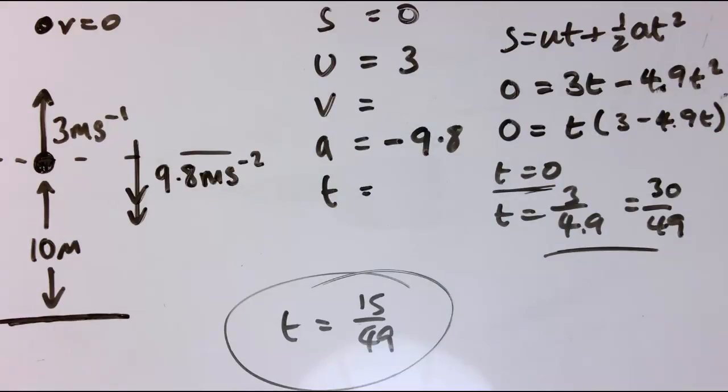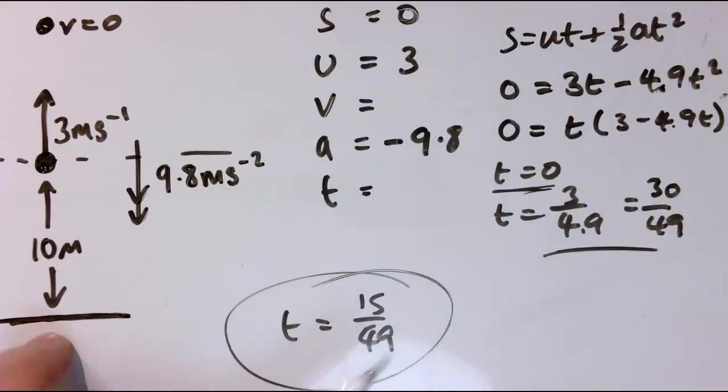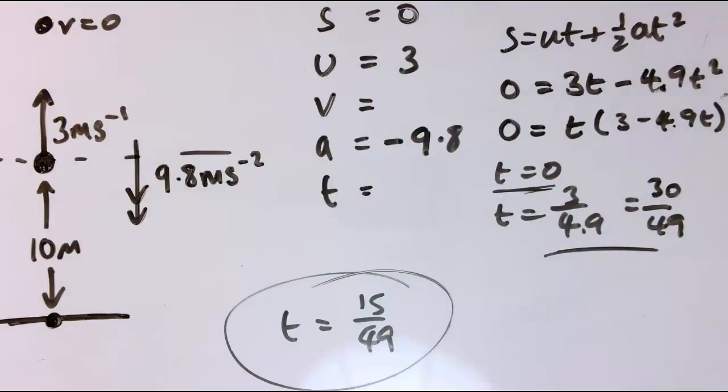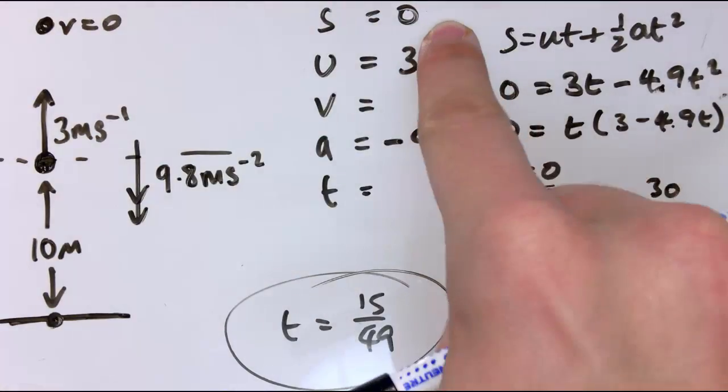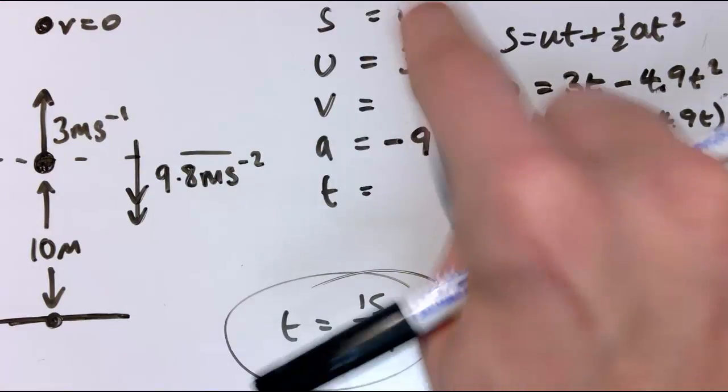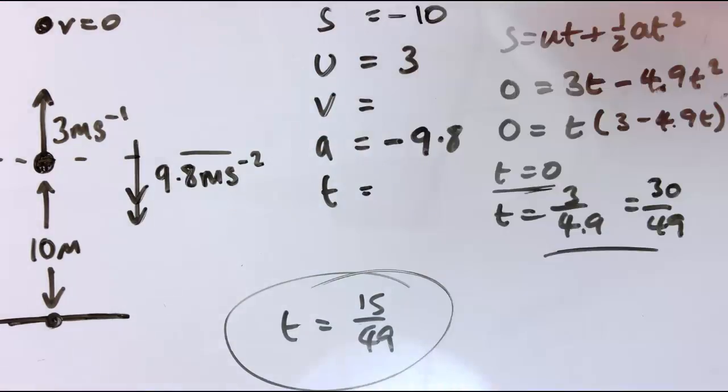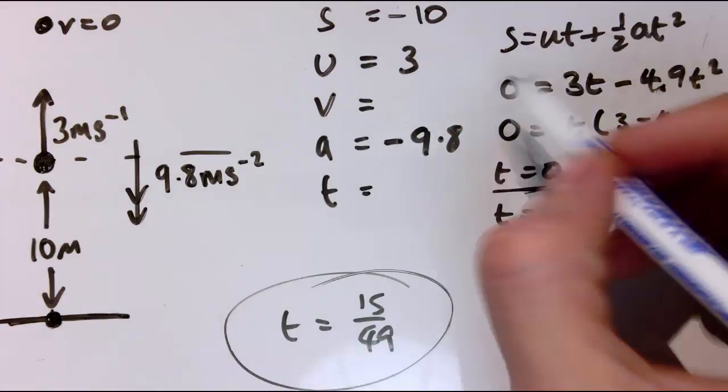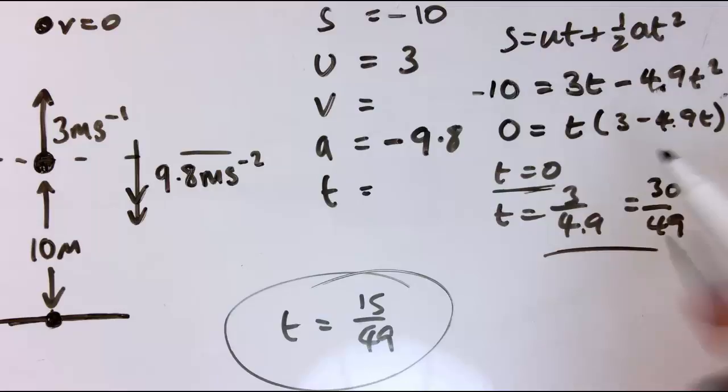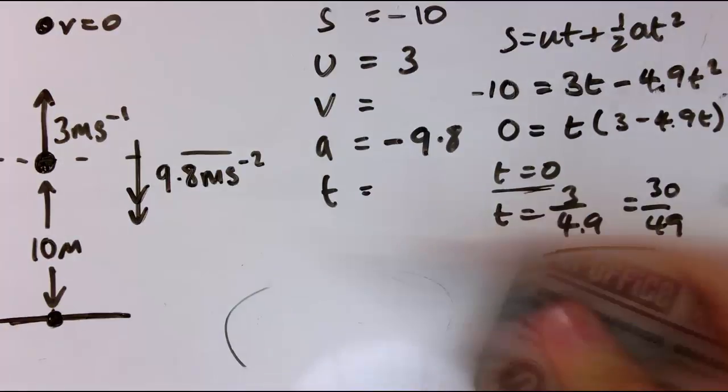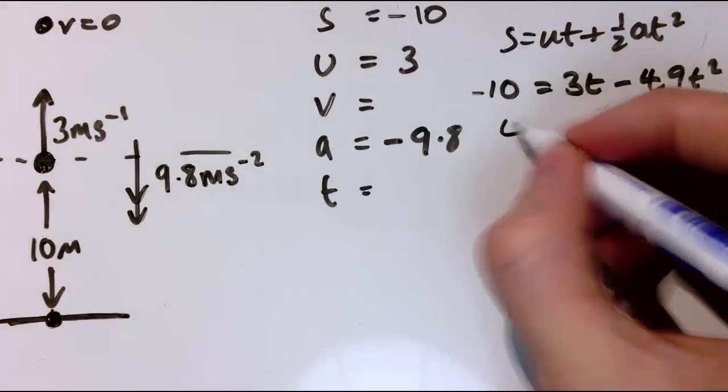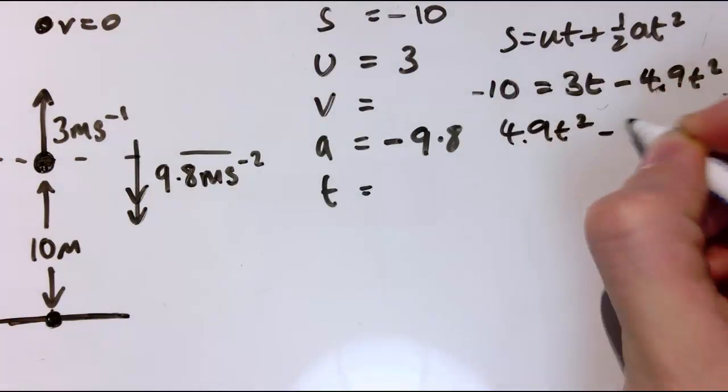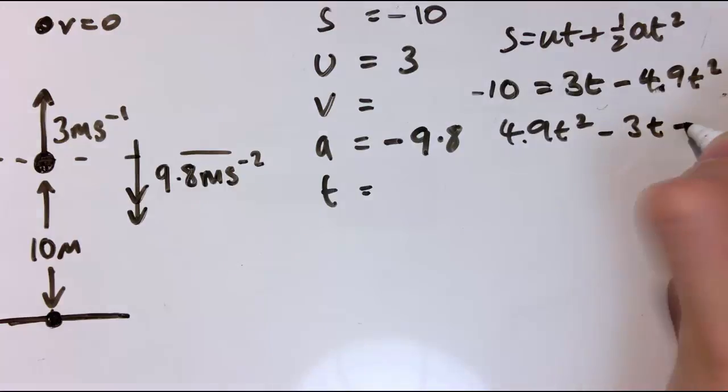So similarly, if I want to know how long does it take to hit the ground, without having got any of the previous parts, I could just do the same thing. But here is my S for my displacement, I could put in minus 10. I want to know when is the displacement minus 10, so here I would just get minus 10 in here, and now I'd have to solve this SUVAT equation, which again is a quadratic. So I've just got to solve 4.9t squared minus 3t minus 10 equals 0.